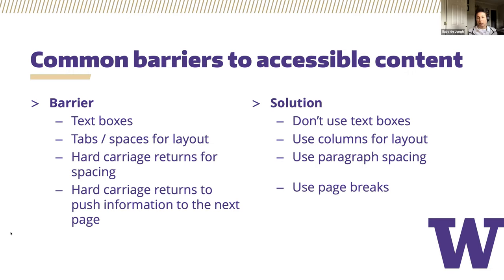I still see some document creators using tabs and spaces to format text in order to make it look like columns. This causes some very unpredictable results when using a screen reader or other assistive technologies — it really messes up the reading order. To make sure that your text flows accurately, use the column layout tool in order to flow the text as a column, and this will force the screen reader to read the information as a column as it's presented.